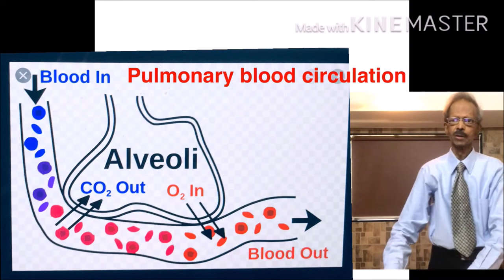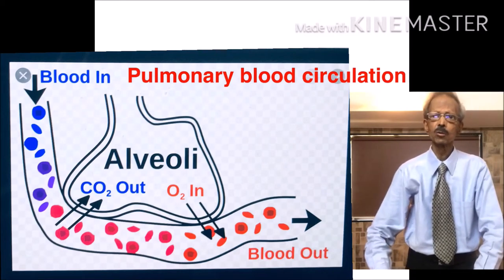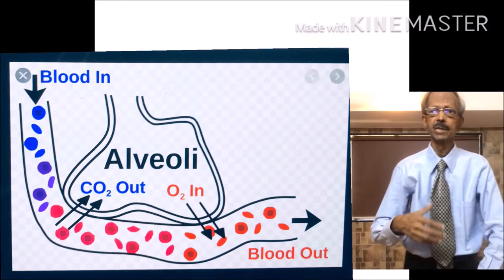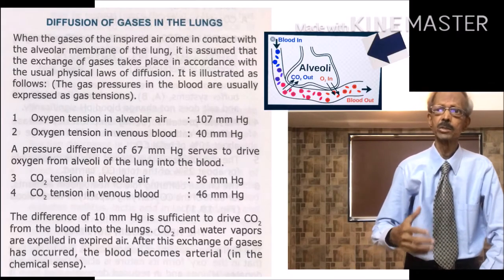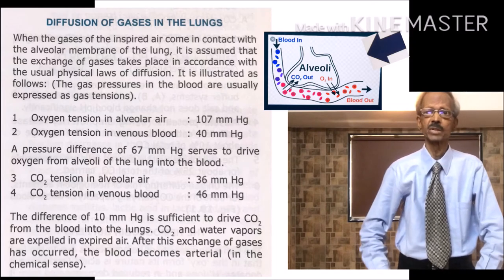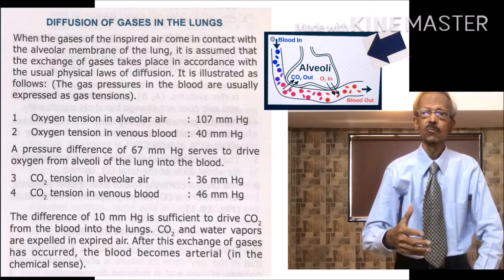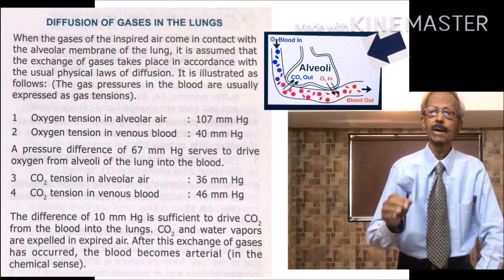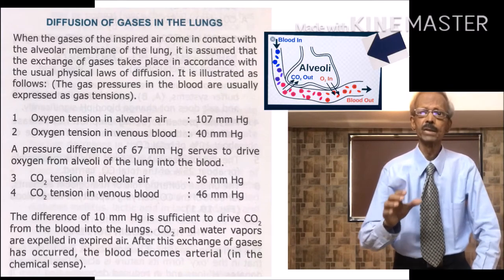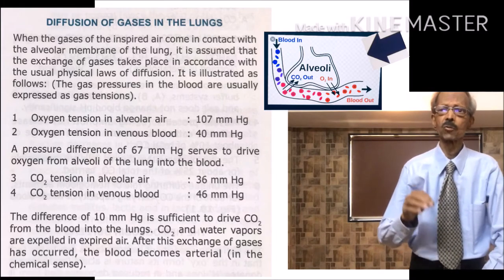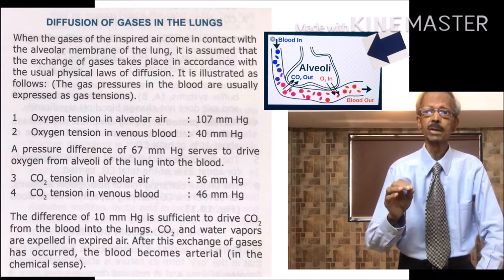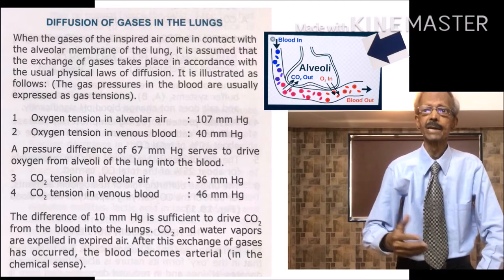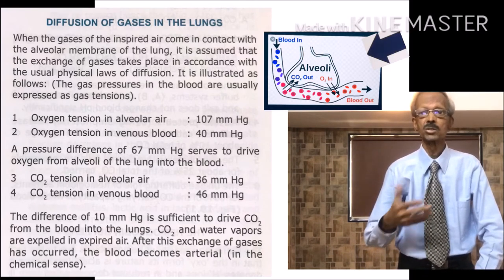Referring to the figure on the left hand side, in the case of a normal individual, during pulmonary circulation, oxygen tension in alveolar air is 107 and that in venous blood is 40. This pressure difference of 67 drives oxygen from alveoli into the blood. Similarly, carbon dioxide tension in alveolar air is 36 and that in venous blood is 46, and this difference of 10 mmHg drives carbon dioxide from blood into alveolar air. This way, blood gets purified and gets sufficient oxygen for systemic blood circulation.